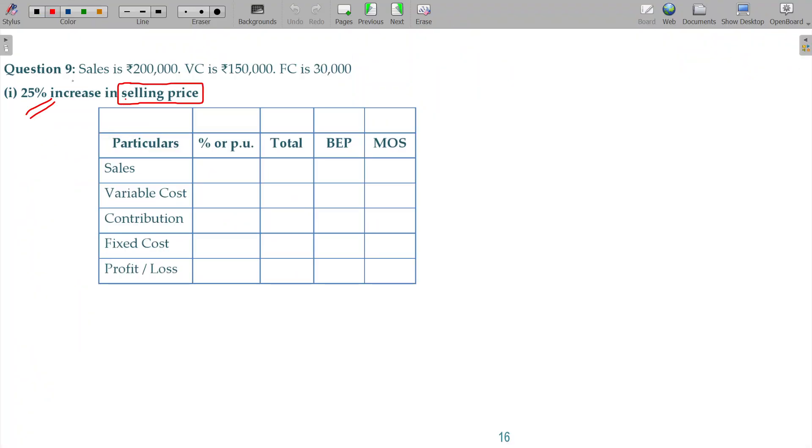Now, let's try question number 9. Sales 2 lakhs, variable cost 1 lakh 50,000, fixed cost 30,000. Selling price change will have the impact in PVR also.